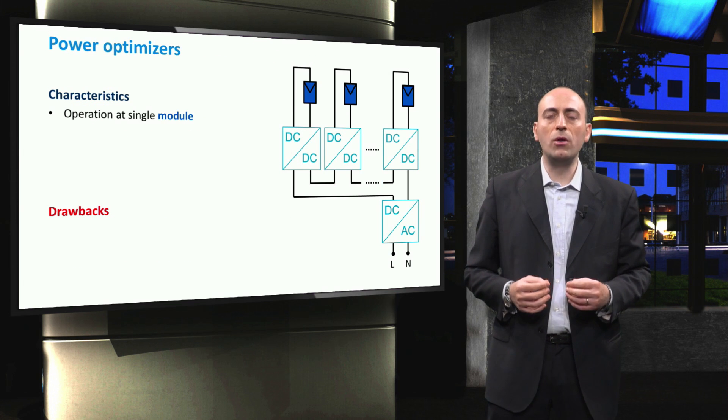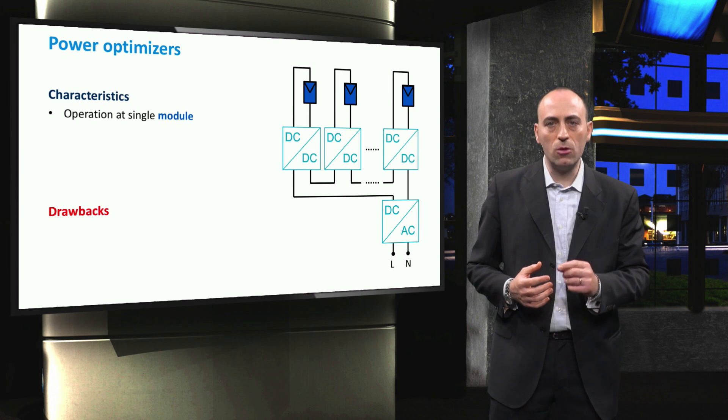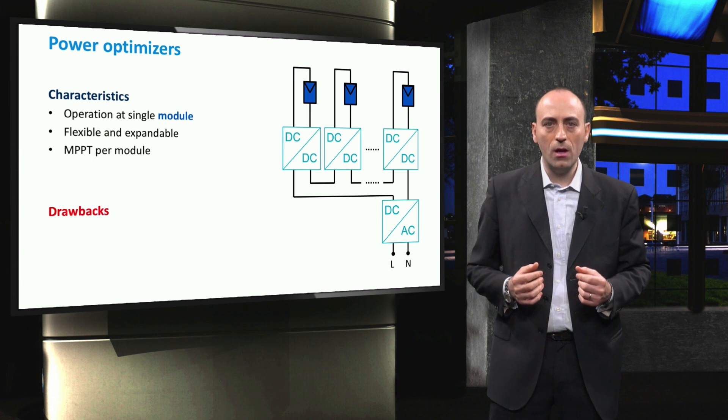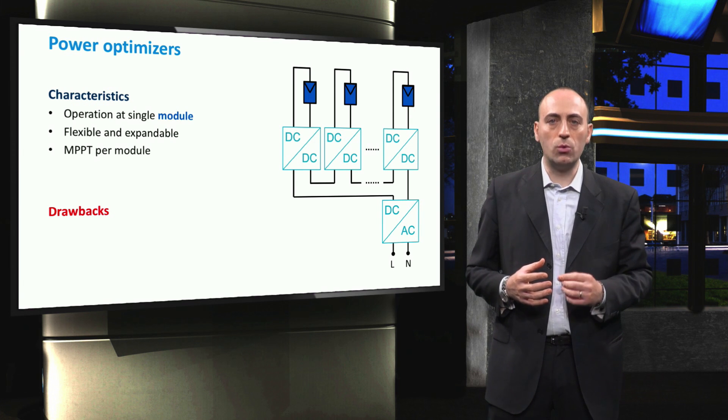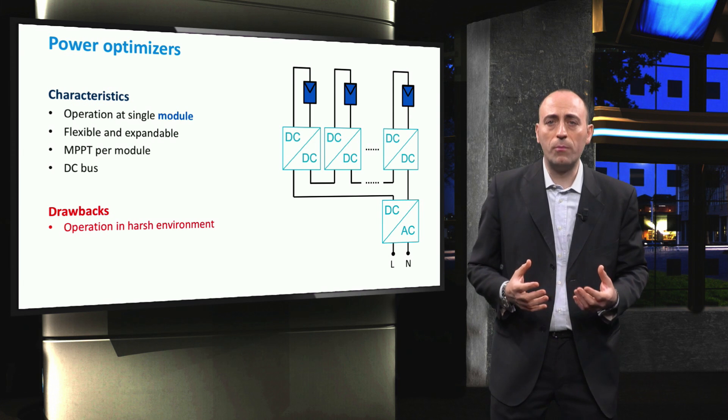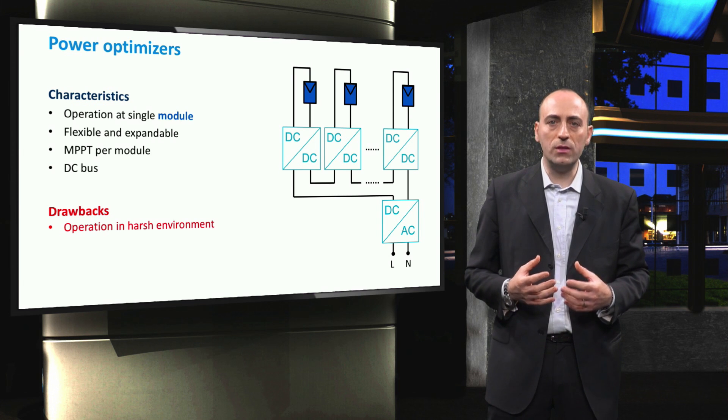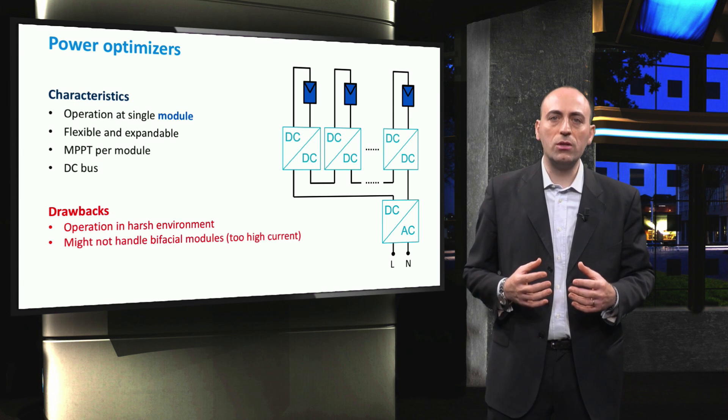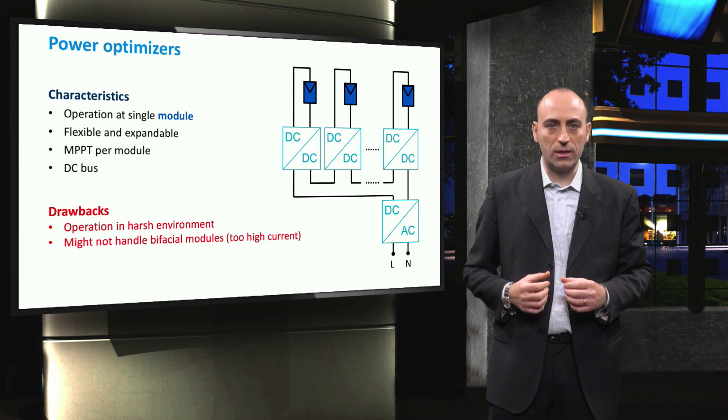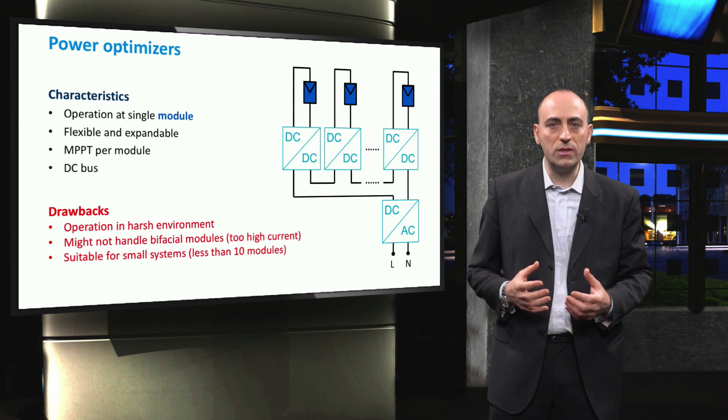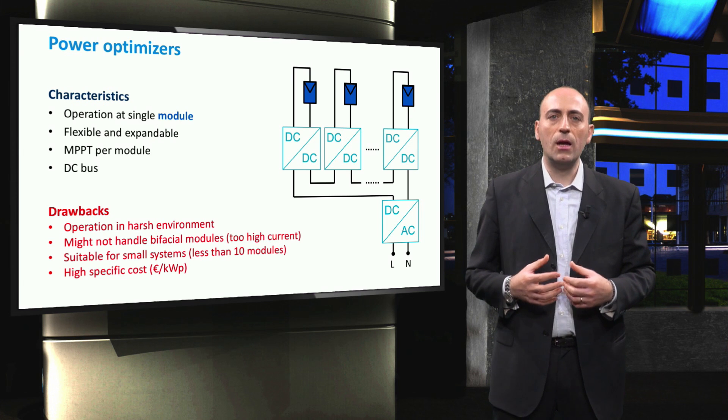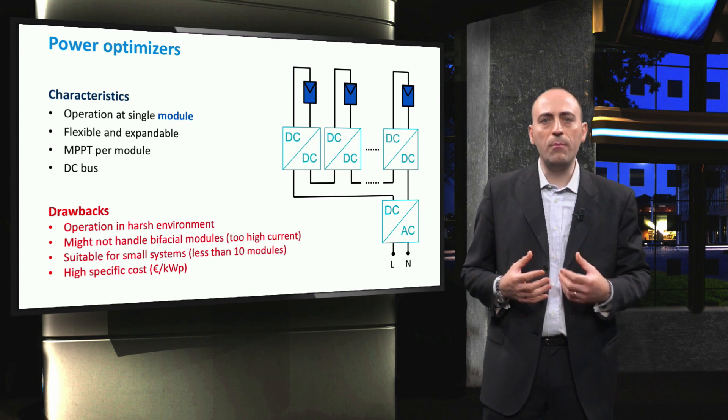Similarly to the previous case, the topology based on power optimizers relies on operations at single module level. It is especially flexible for roofs in urban environment and expandable to a certain extent. Power output is optimized by offering MPPT at module level, and installation is simplified because of the DC bus topology. Passing to the drawbacks, also this topology needs a sturdy embodiment for the power optimizers to be mounted and operated safely at the back of each module. In addition, newer bifacial modules, which promise higher current levels, may not be supported by current technology. This topology is suitable for small systems up to about 10 modules. For larger systems, limitations on voltage and specific costs become too stringent for this topology to perform well and be economically viable.